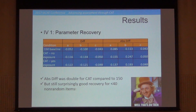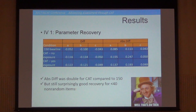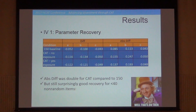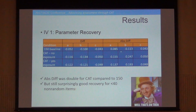Looking at the parameter recovery results, I examined the total difference — that is, the average difference between the old parameter and the new parameter — as well as the average absolute difference, so you can see if there's a signed difference versus an absolute difference. In terms of signed difference, you can see there were some systematic signed differences, indicating bias when trying to calibrate the CAT data. The B parameters showed the most bias — the CAT conditions were about double the absolute error of the baseline condition.